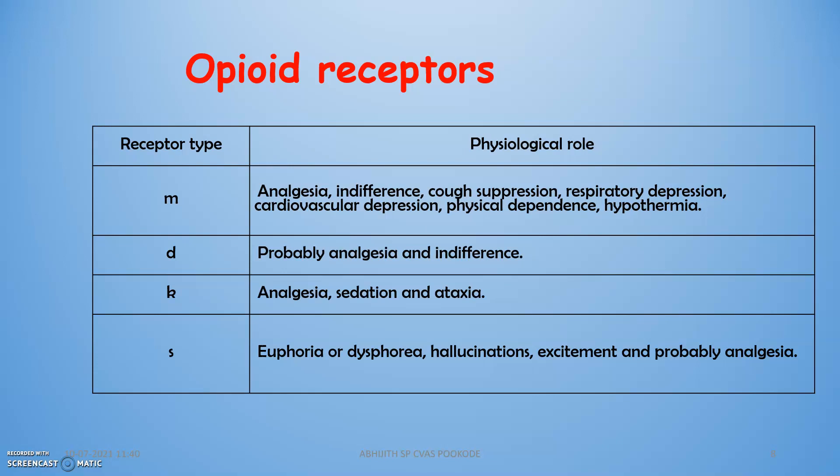Opioid receptors — opioid drug particles bind on these receptors to produce their actions. The four receptor types are mu, delta, kappa, and sigma. Mu receptors mediate analgesia, indifference, cough suppression, respiratory depression, cardiovascular depression, physical dependence, and hypothermia. Delta receptors are associated with analgesia and indifference. Kappa receptors mediate analgesia, sedation, and ataxia. Sigma receptors mediate euphoria, dysphoria, hallucination, excitement, and probably analgesia.